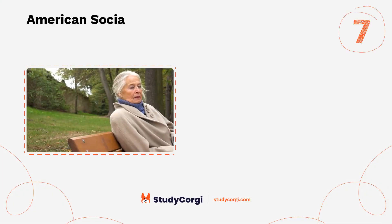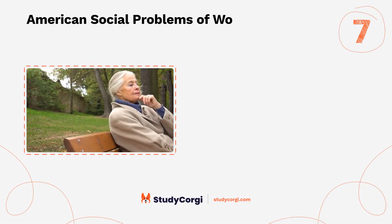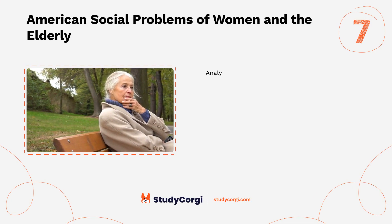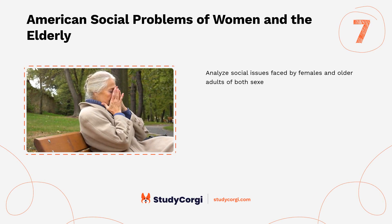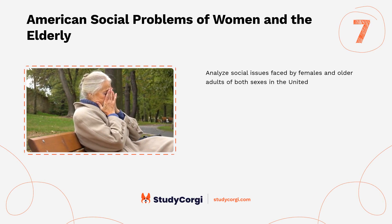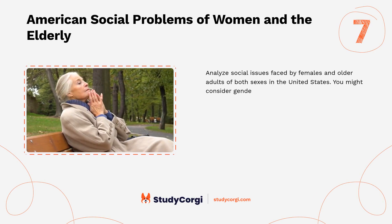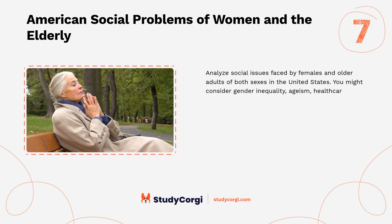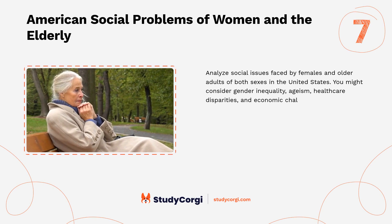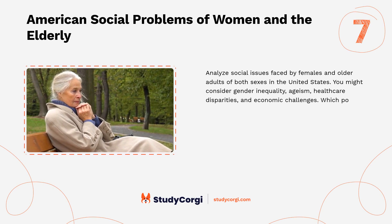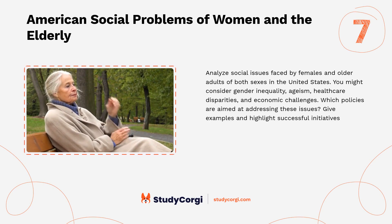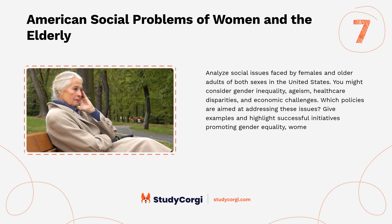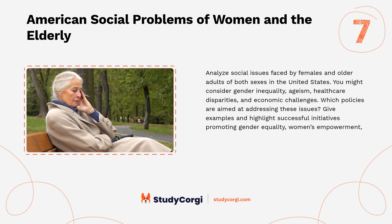American social problems of women and the elderly. Analyze social issues faced by females and older adults of both sexes in the United States. You might consider gender inequality, ageism, health care disparities, and economic challenges. Discuss which policies are aimed at addressing these issues, and highlight successful initiatives promoting gender equality, women's empowerment, and elderly care.